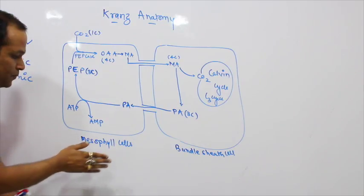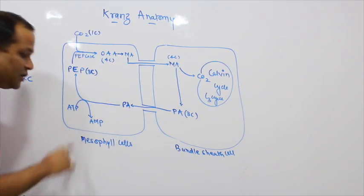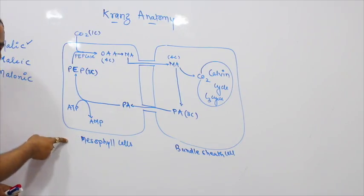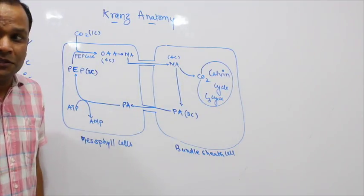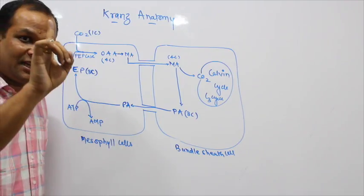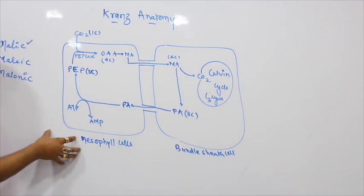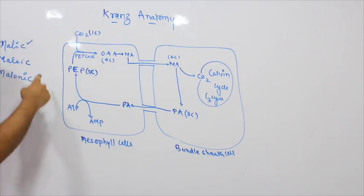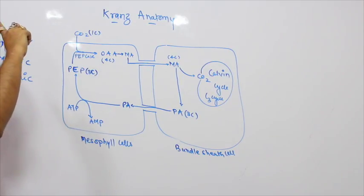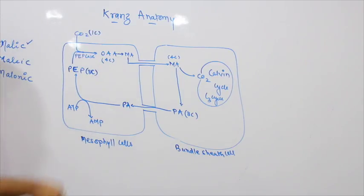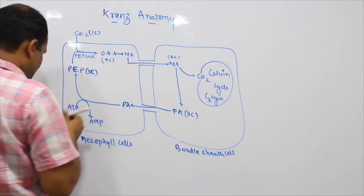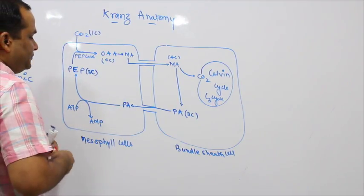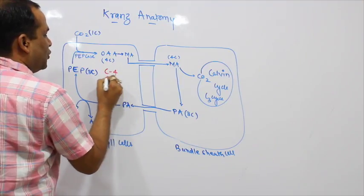There are two types of cells: mesophyll and bundle sheath. Carbon fixation occurs initially in the mesophyll cell. The second fixation — the Calvin cycle — occurs in the bundle sheath cell, where the CO2 released is utilized. This entire pathway is called the C4 cycle, because a 4-carbon compound is the key intermediate.